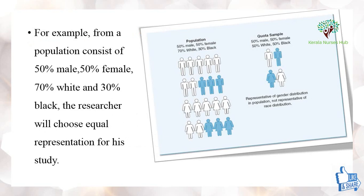For example, from a population consisting of 50% male and 50% female, and 70% white and 30% black, the researcher will choose equal representation — selecting 50% male, 50% female, 50% white, and 50% black for the study. The researcher ensures equal representation of the samples from the quotas.